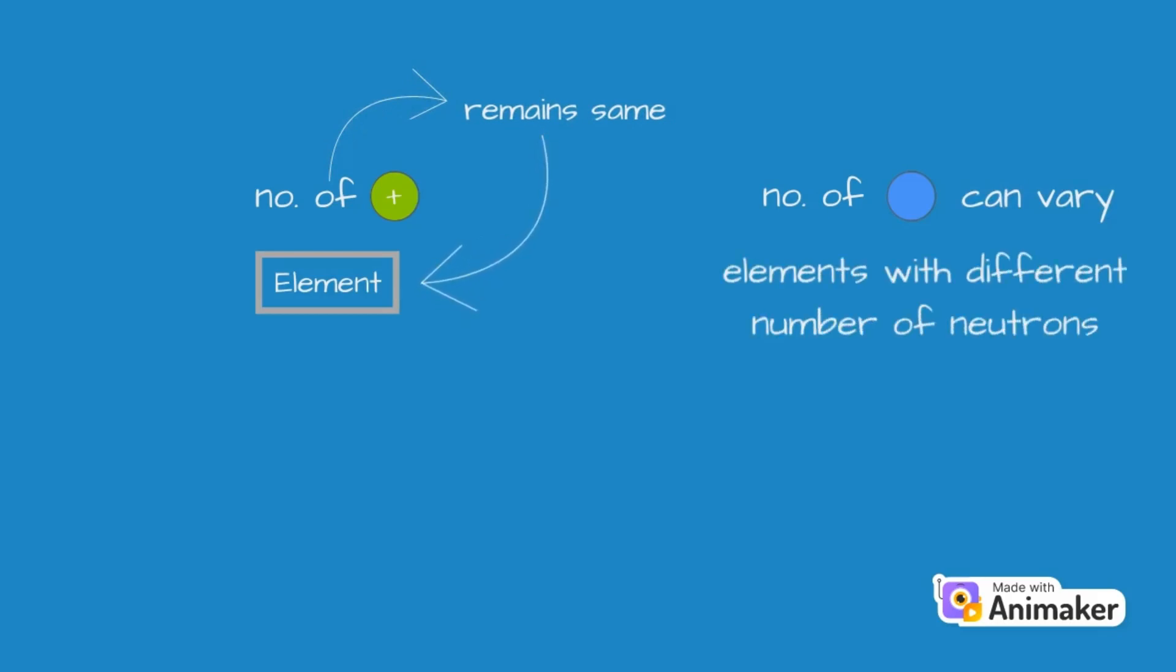Now we know that an element is defined by the number of protons its atom consists of. But the number of neutrons of a particular element can vary between different atoms. As long as the number of protons remains the same, it's still the same element. We call these different forms of atoms of an element with different number of neutrons as isotopes.